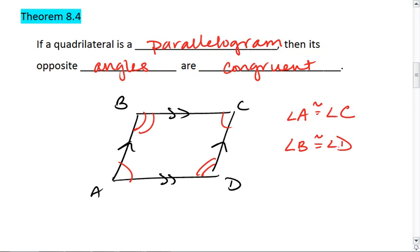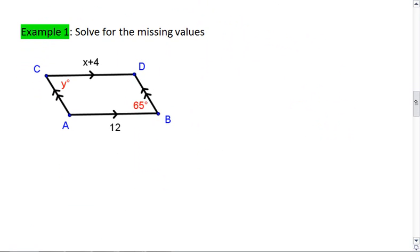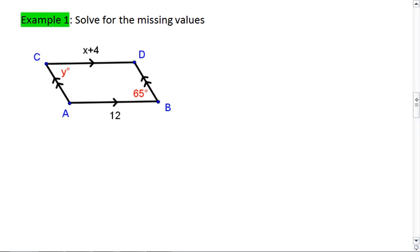Alright. Opposite sides are congruent. Opposite angles are congruent. Using that knowledge, let's move on to an example.